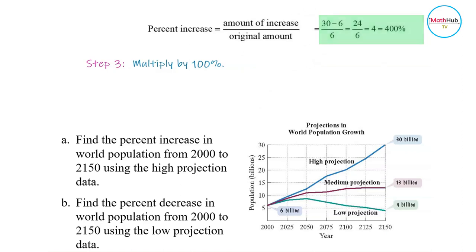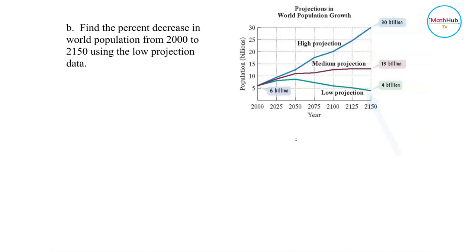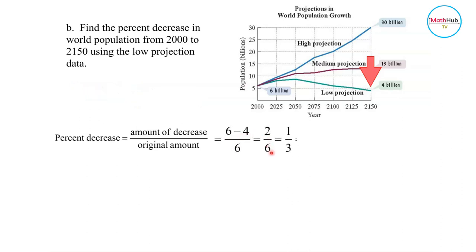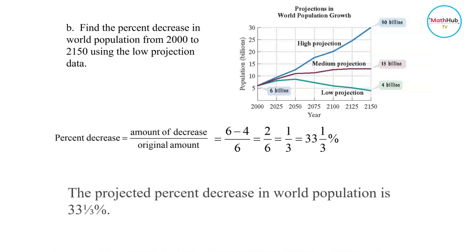Times 100, you get 400 percent. Now to get the percent decrease, we refer to the green graph, which is the low projection. You follow the same formula: get the amount of decrease and divide it by the original amount. The original population is 6 billion and the projected population by 2150 is 4 billion. So 6 minus 4 is 2, divided by the original population of 6. Two over 6 is one-third, which is equal to 33 and one-third percent.